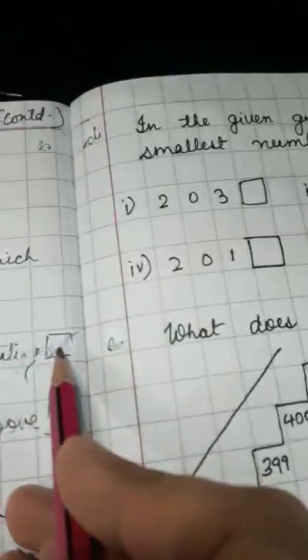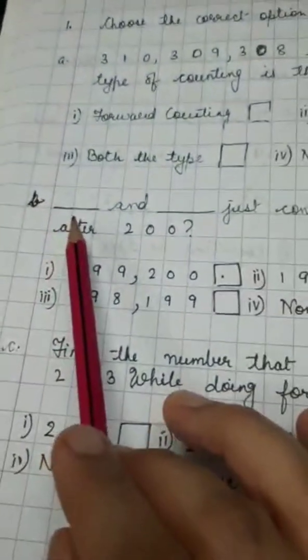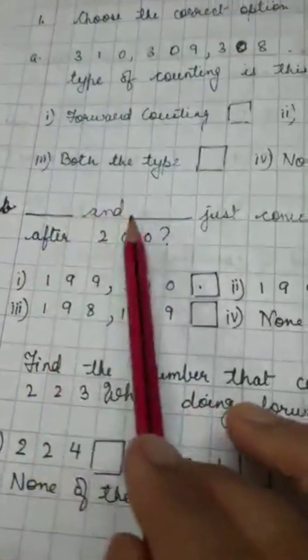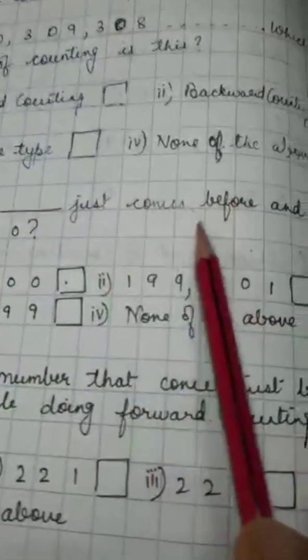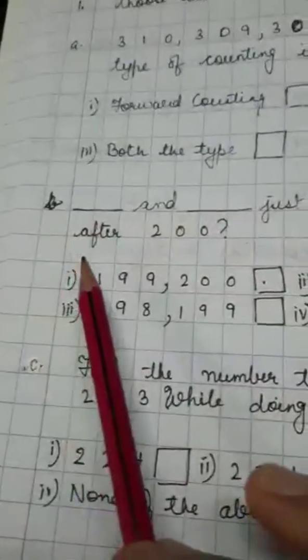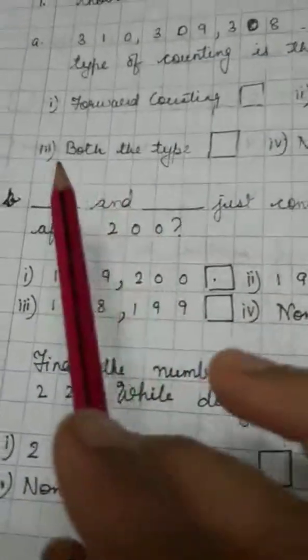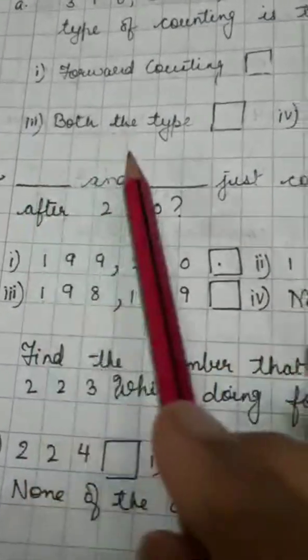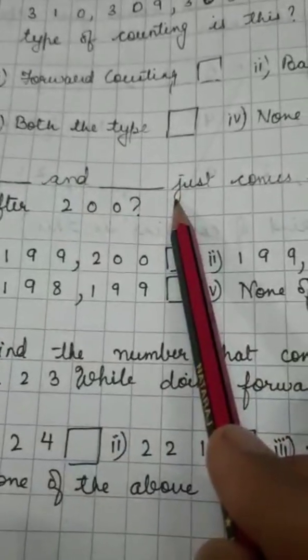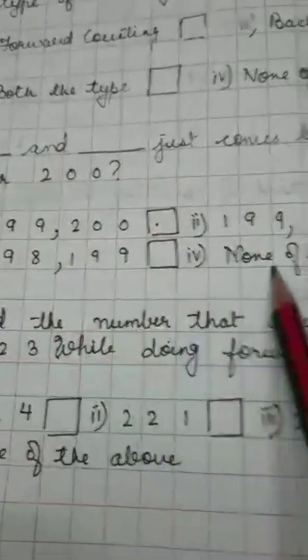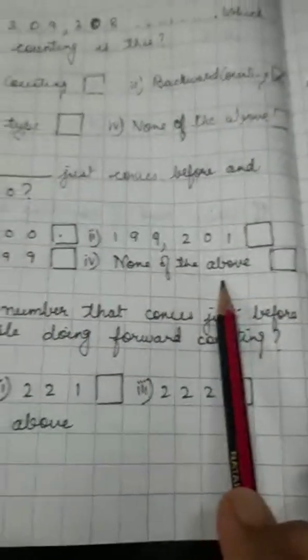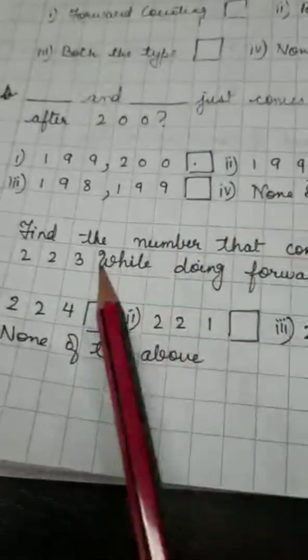Then, you will put a tick at the correct option, okay? Now, question number B is, dash and dash just comes before and after 200. Now, dash comes before 200 and dash comes after 200. You have to see which is the correct option and you will put a tick in that option, okay?